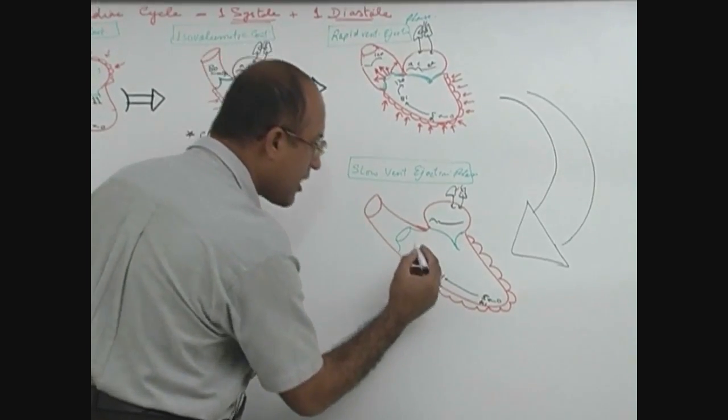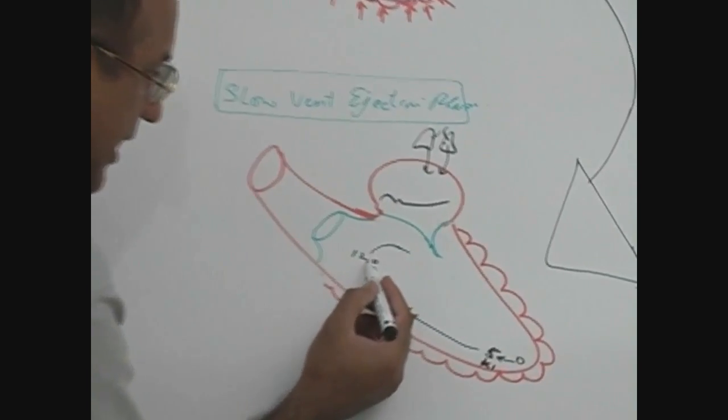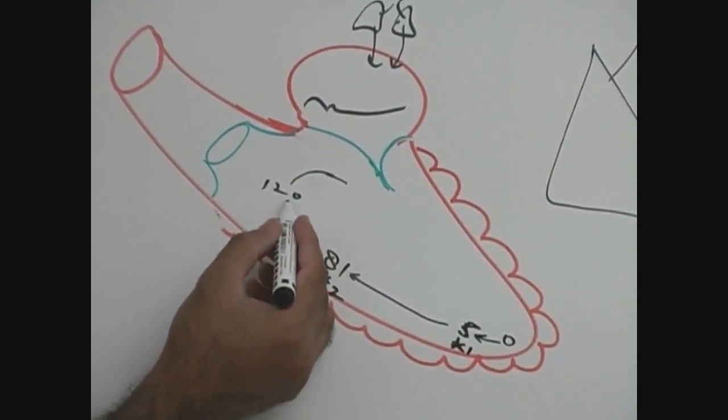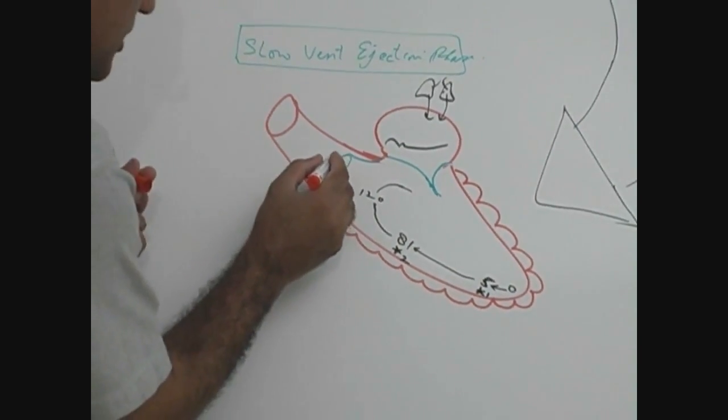Now we are entering into phase when gradually pressure starts falling. And when pressure is starting to fall, naturally the ejection has become slower.